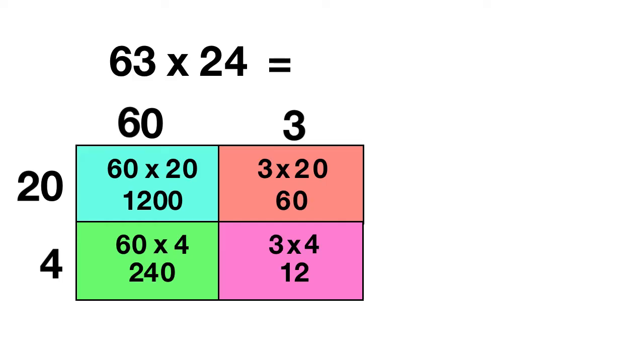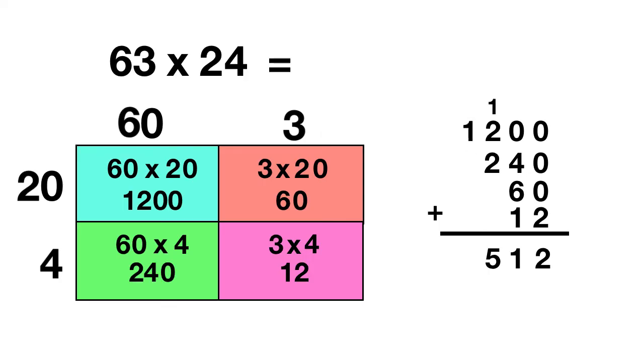Now all that's left is we need to add up all four of these pieces. We add together 1,200, 240, 60, and 12. When we do this, we have 0 plus 0 plus 0 plus 2 in the ones place, that's 2. In the tens place, we have 0 plus 4 plus 6 plus 1, which is 11. So we'll regroup it. In the hundreds place, we have 1 plus 2 plus 2, which is 5. And in the thousands place, you just have this 1. So our answer to 63 times 24 is 1,512.